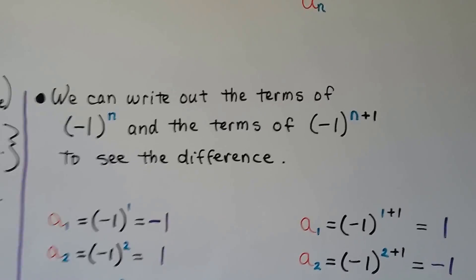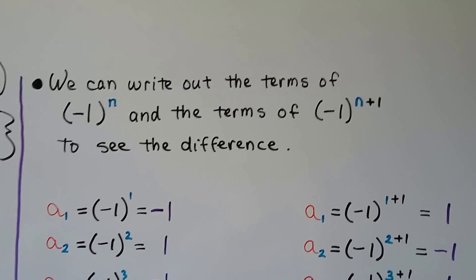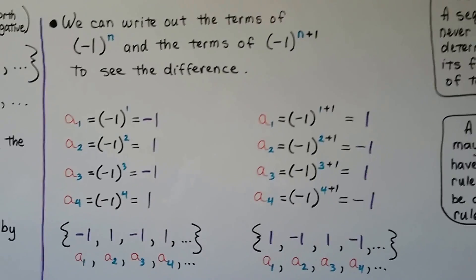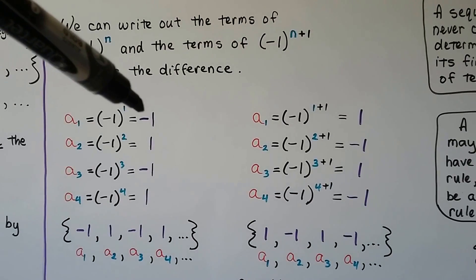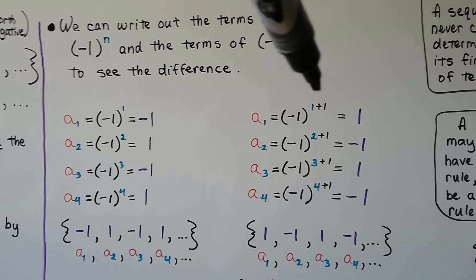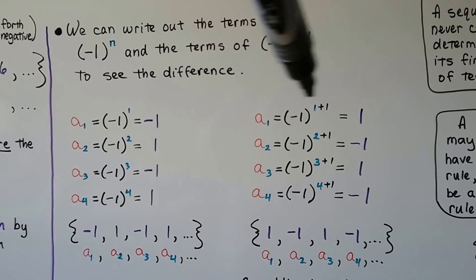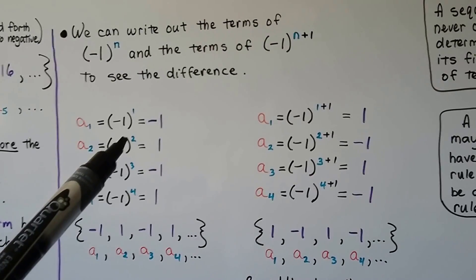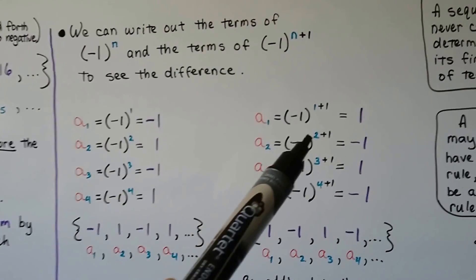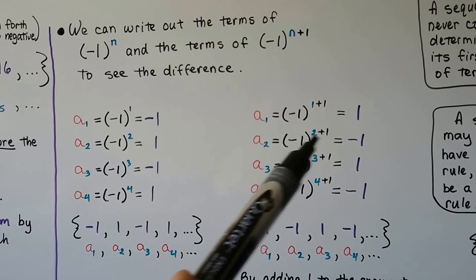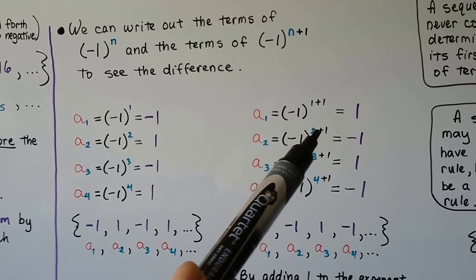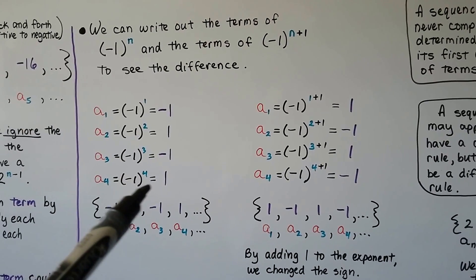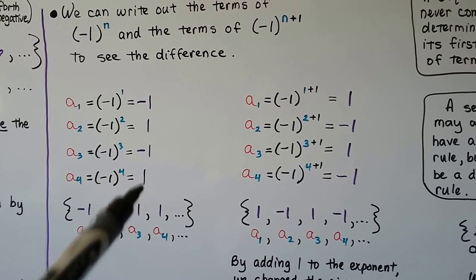We can write out the terms of negative one to the nth and the terms of negative one to the n plus one and see the difference. For the first one it's going to be a negative one, but when we add one to the exponent, it's going to be a positive one because now it's even. One is an odd number; two is an even number, so we ended up with a positive. We add one to this side, so really it's to the third power — that's odd, so we have a negative. Odd makes a negative; positive even makes a positive.